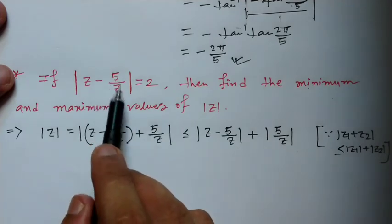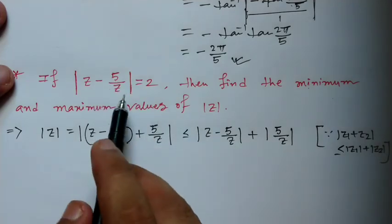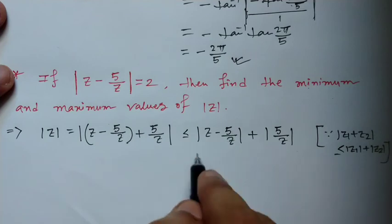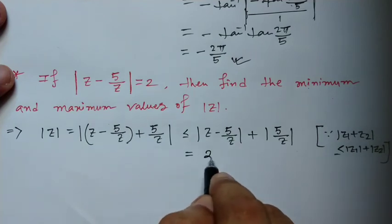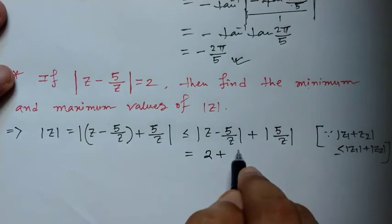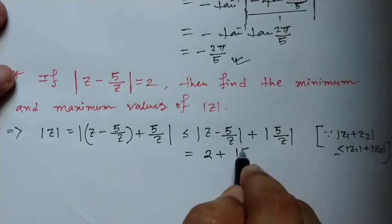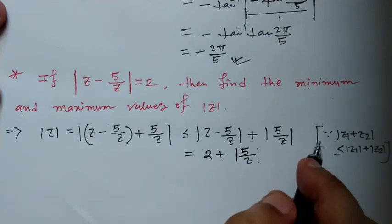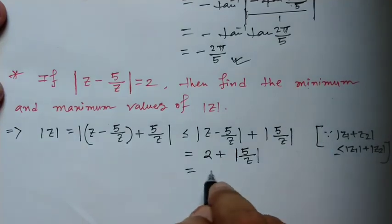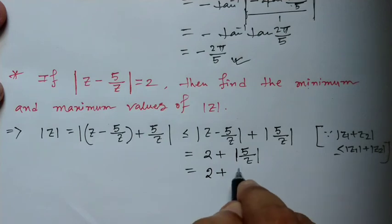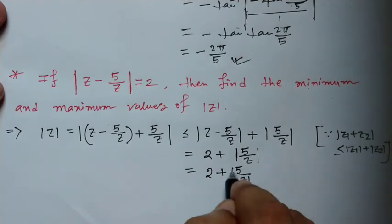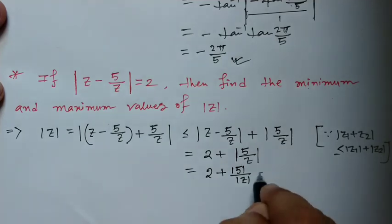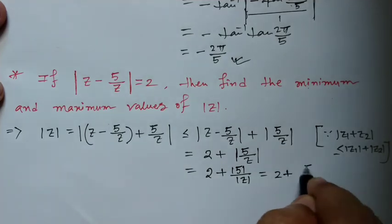We know that mod of (z minus 5/z) equals 2, so using this result we get mod z is less than or equal to 2 plus mod of (5/z), which equals 2 plus 5 by mod z, since mod 5 equals 5.